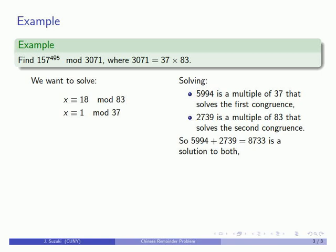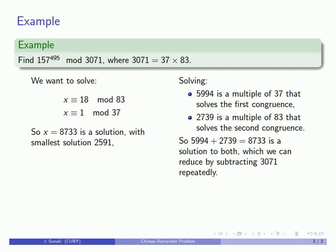We want to find the smallest solution because we're working mod 3071, so I can repeatedly subtract 3071 to find smaller solutions. It turns out that the smallest solution is going to be 2591. So 157 to the power of 495 is 2591 mod 3071.